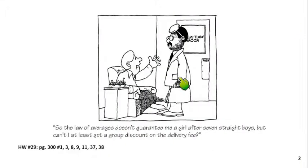So, this comic has to do with the myth that we talked about. The old woman here says, So, the law of averages doesn't guarantee me a girl. I suppose she can't be that old. She's having a lot of kids. So, the law of averages doesn't guarantee me a girl after seven straight boys. But can I at least get a group discount on the delivery fee? Just because she thinks she's maybe due, right? People think they're due for a boy in this case because they've had seven girls already. It's not true because each kid's actually independent of the last one. So, that goes back to that myth that we talked about from probability.